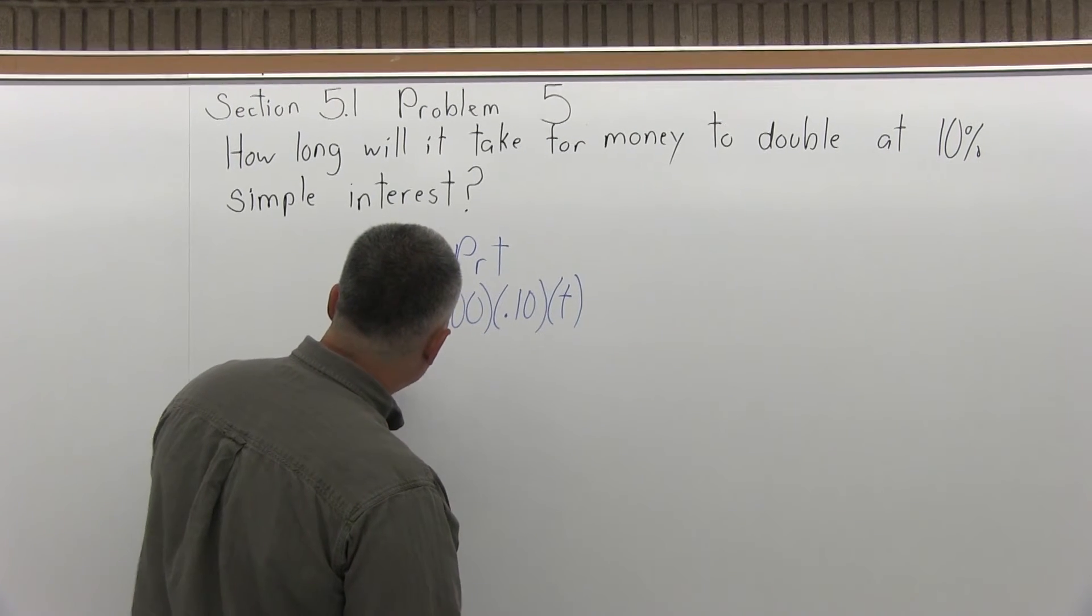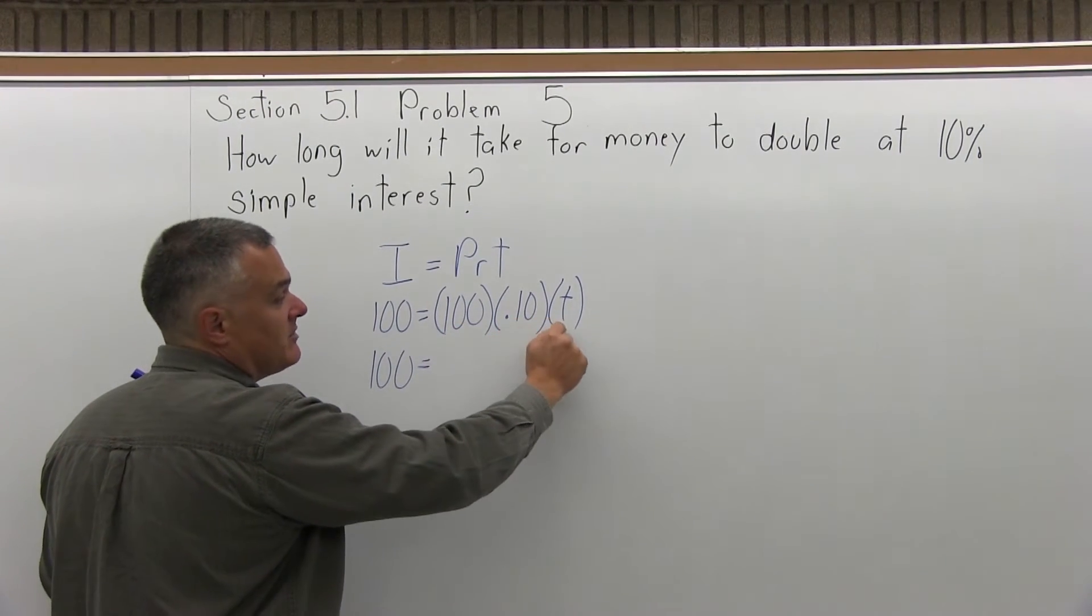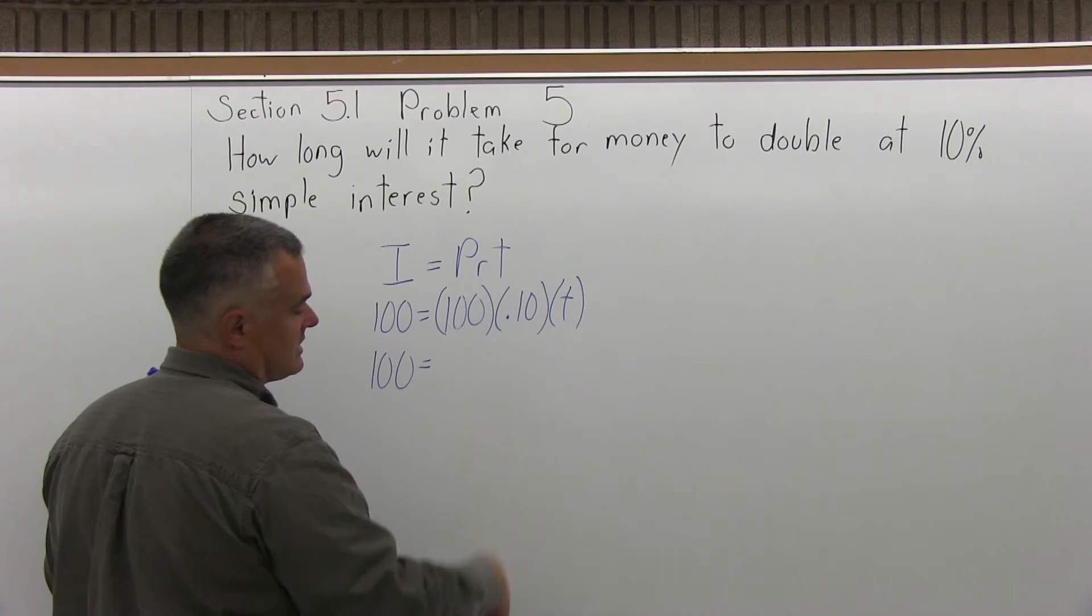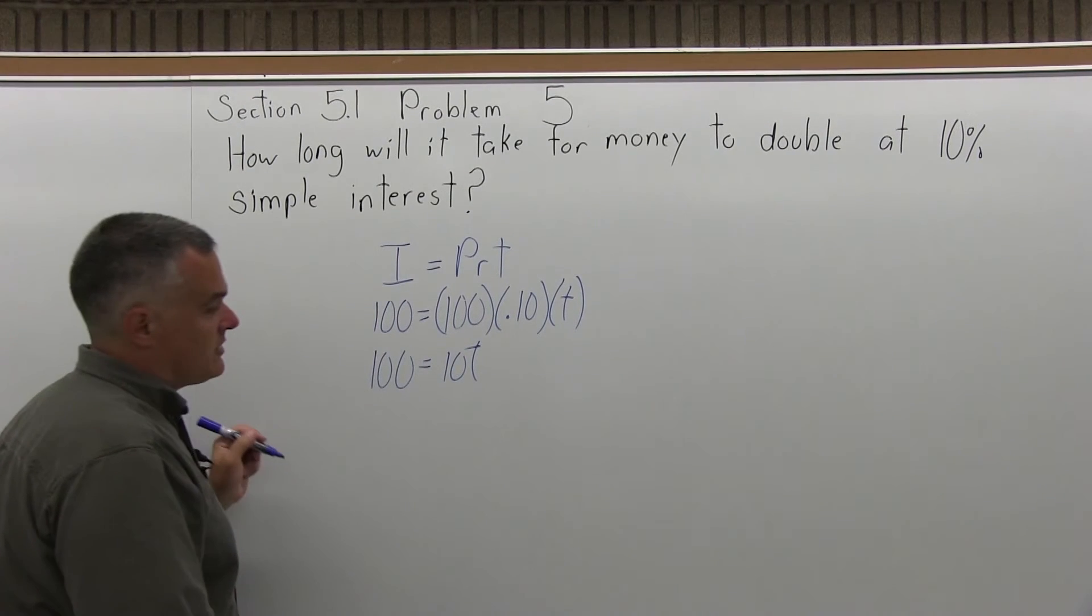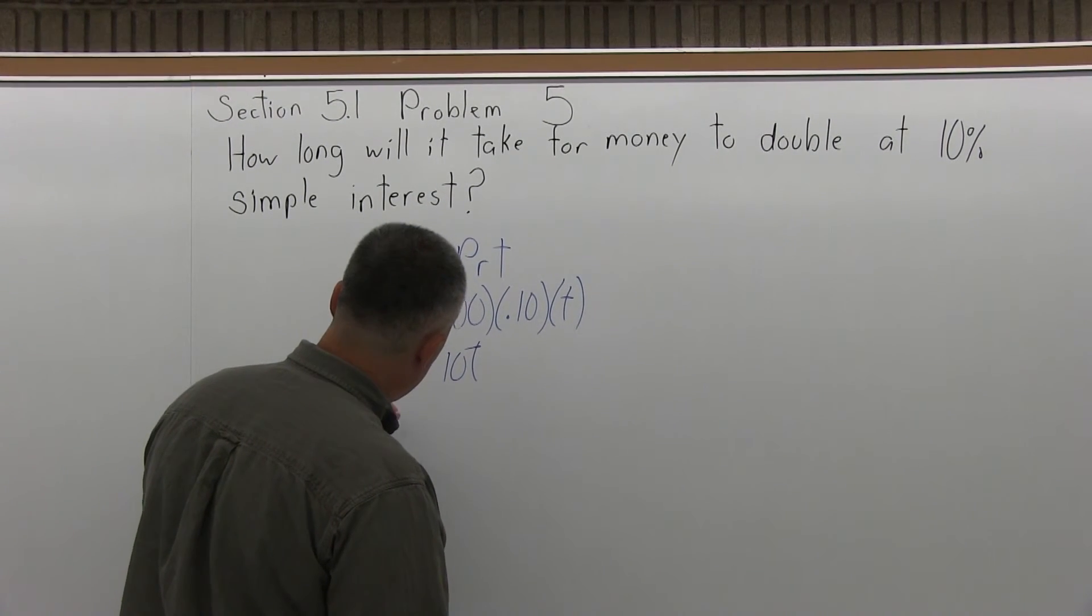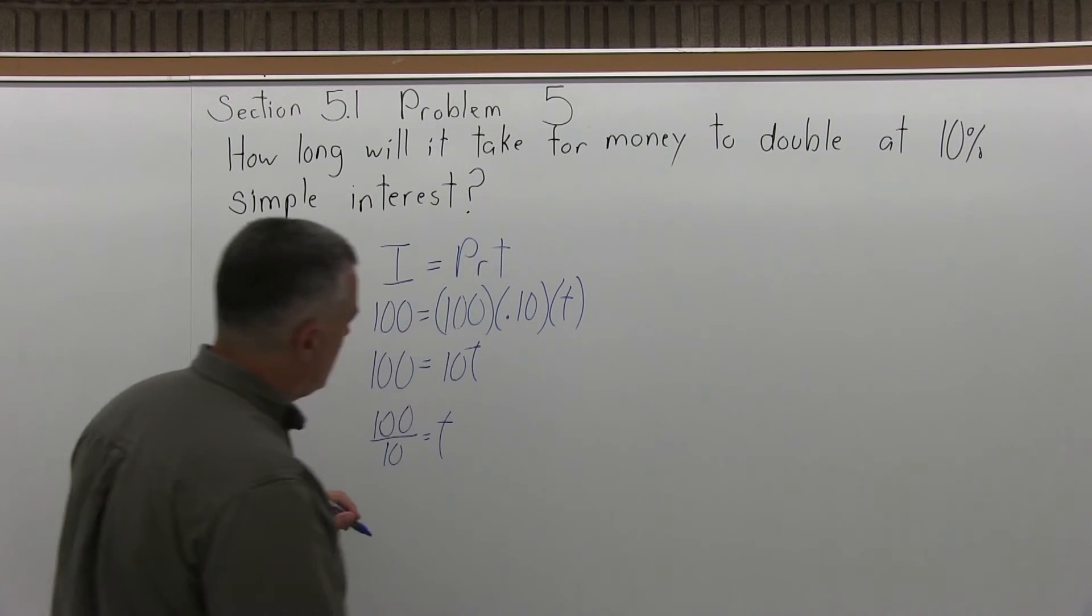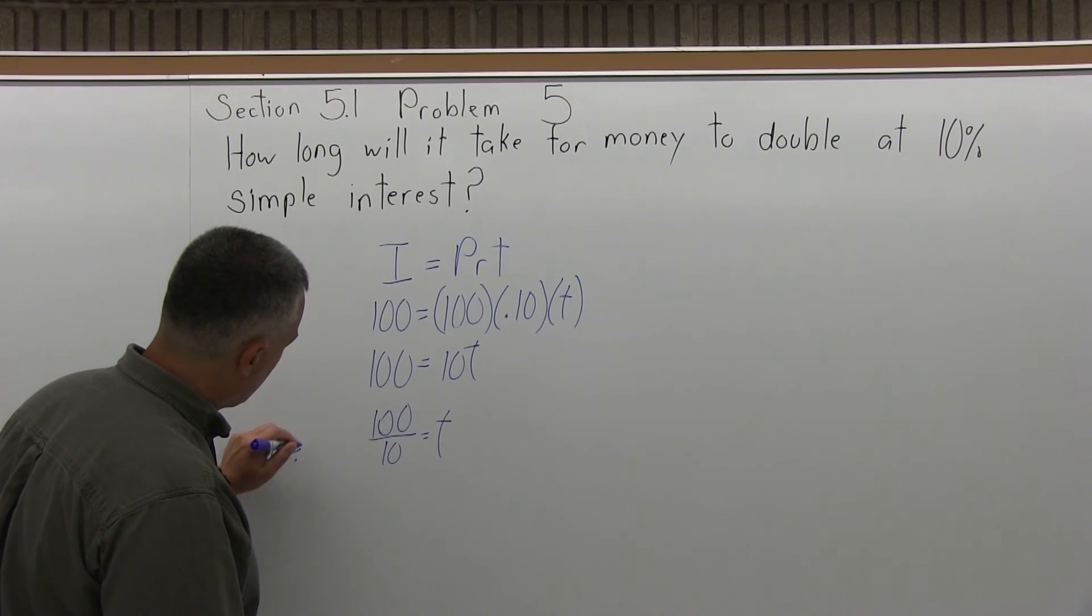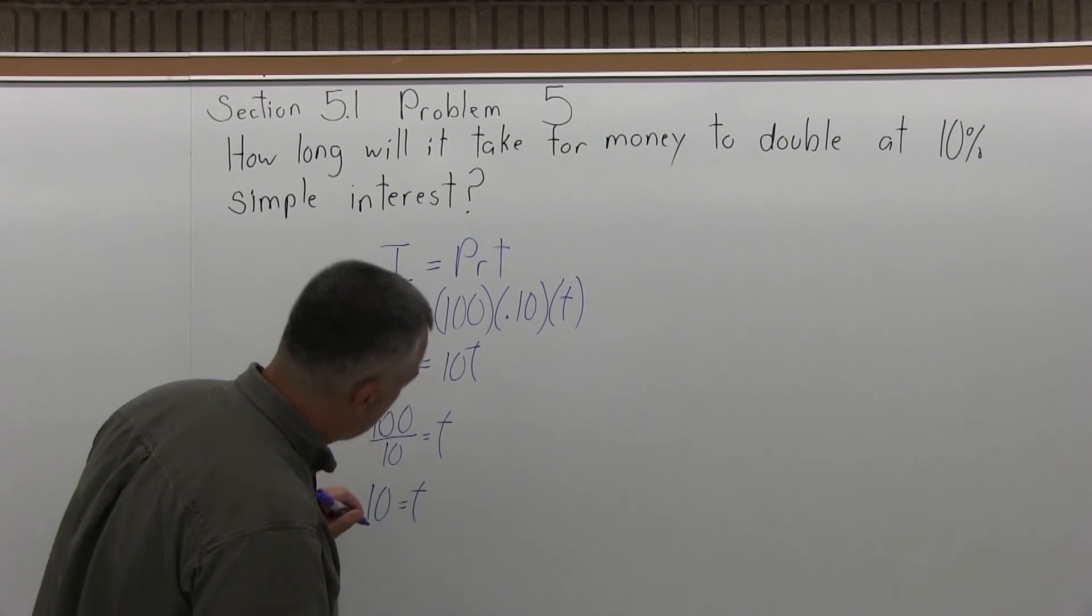So now, let me multiply out on the right side of the equals sign. 100 times 0.10 times T is 10T. The 100 times the 0.10 just slides the decimal over. So I have 100 equals 10T, and now I'll divide out the 10 in front of the T. So 100 divide by 10 equals T, and that's easy to reduce. It's 10, and if you don't see it, just use your calculator. 100 divide by 10 equals.